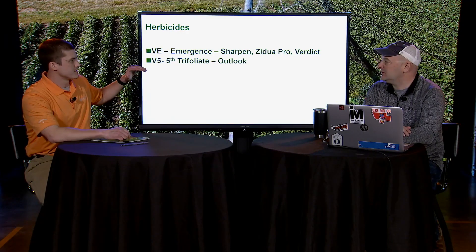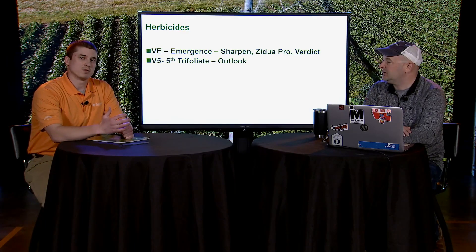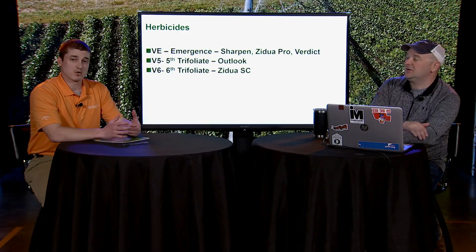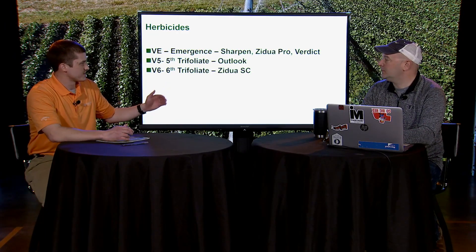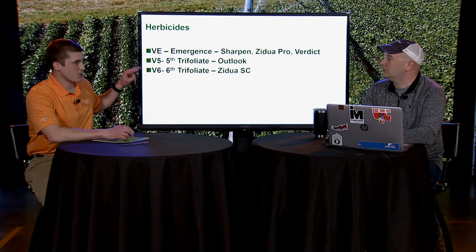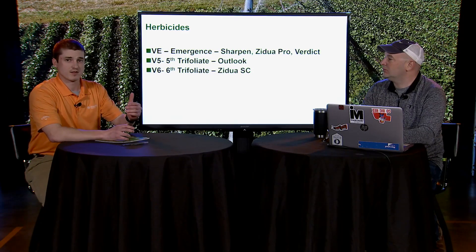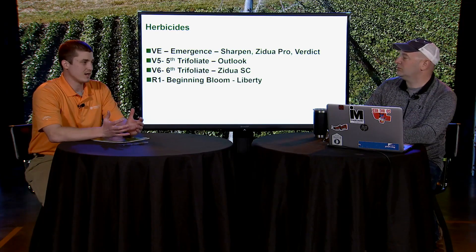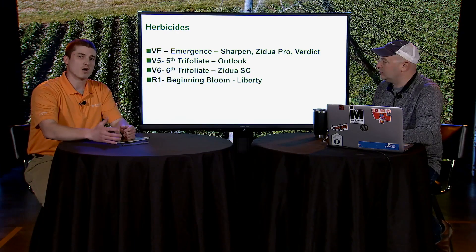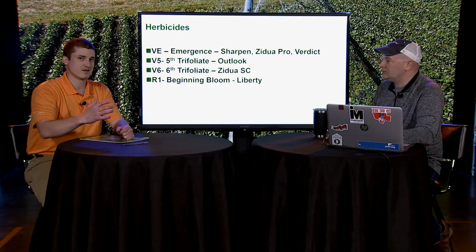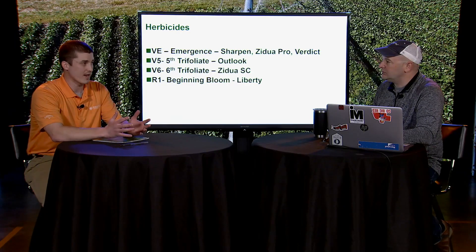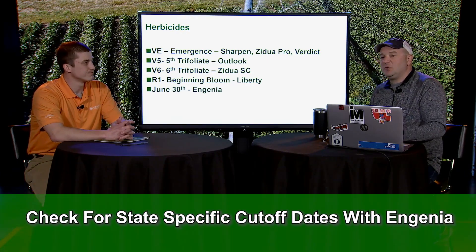Once we get to post-application herbicides, we'll mention residuals first. Outlook herbicide can be applied through V5 or the fifth trifoliate stage. Its counterpart as a solo Group 15 residual in soybeans, Zidua SC, can be applied through V6 or the sixth trifoliate. Those are the two post-residual products of choice. For emerged weed control, Liberty's cutoff is up to R1 — beginning bloom. As soon as we see a flower anywhere on that soybean plant, we're at R1 and cannot apply Liberty after that.